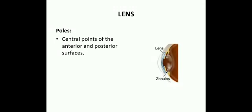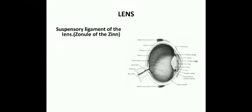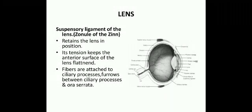The lens has two poles — anterior and posterior. The central points of the anterior and posterior surfaces are called the anterior and posterior poles respectively. Joining these two poles gives the axis of the lens, and the surrounding circumference is called the equator. The suspensory ligament of the lens, or zonule of Zinn, retains the lens in position; its tension keeps the anterior surface of the lens flattened. Its fibers are attached to the ciliary processes, the furrows between ciliary processes, and the ora serrata, and centrally to the lens.